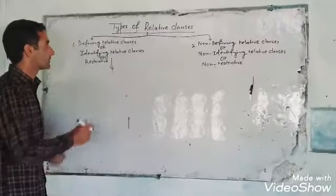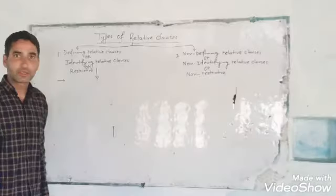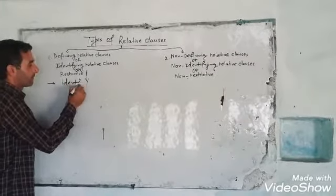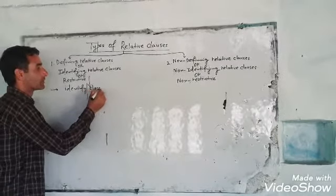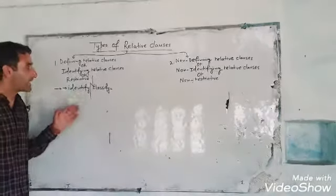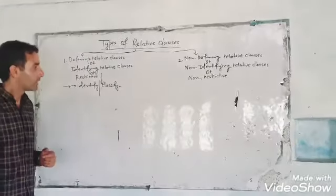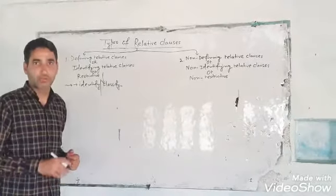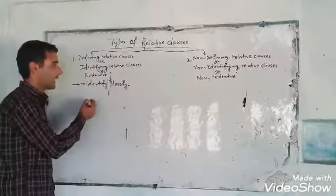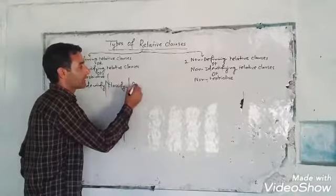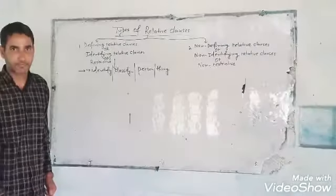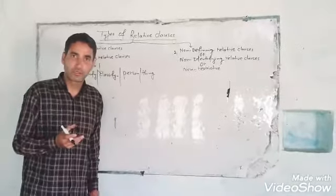As the name suggests, defining relative clauses identify or classify nouns. They tell us which person or thing, or which kind of person or thing, is meant.